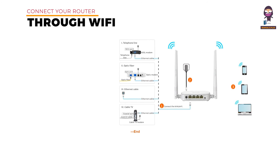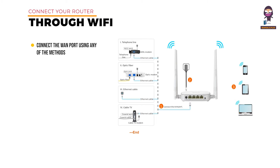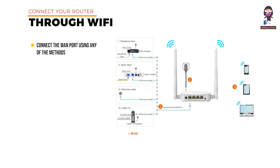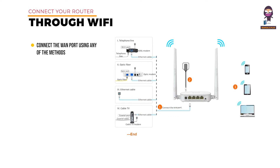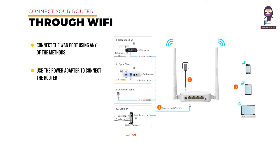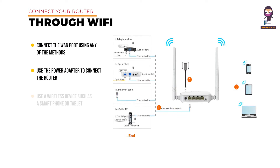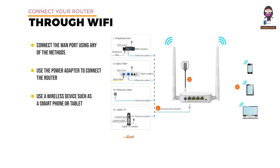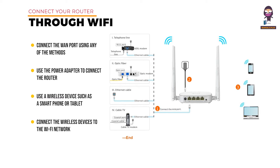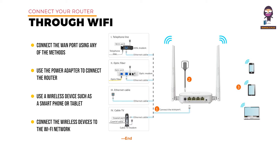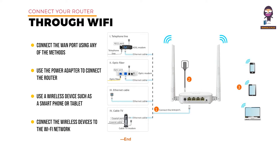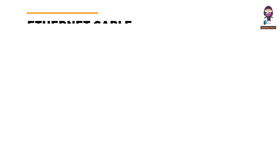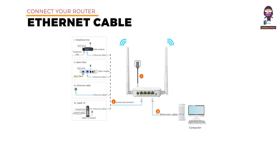The label also shows the MAC address of the router, WPS PIN code of the router — the PIN code may be required by a wireless client. To connect your router through Wi-Fi: connect the WAN port using any of the methods shown in the following figure depending on your internet connection type. Use the power adapter to connect the router to a power supply. Then use a wireless device such as a smartphone or tablet to search for the Wi-Fi network by the Wi-Fi name of the router and connect to it.